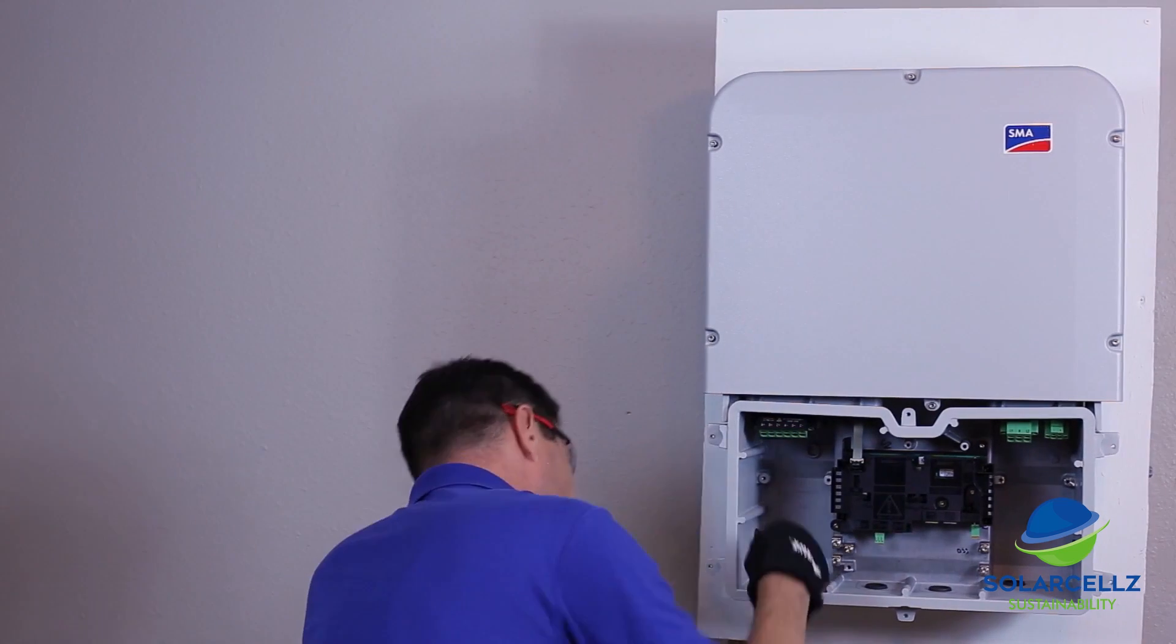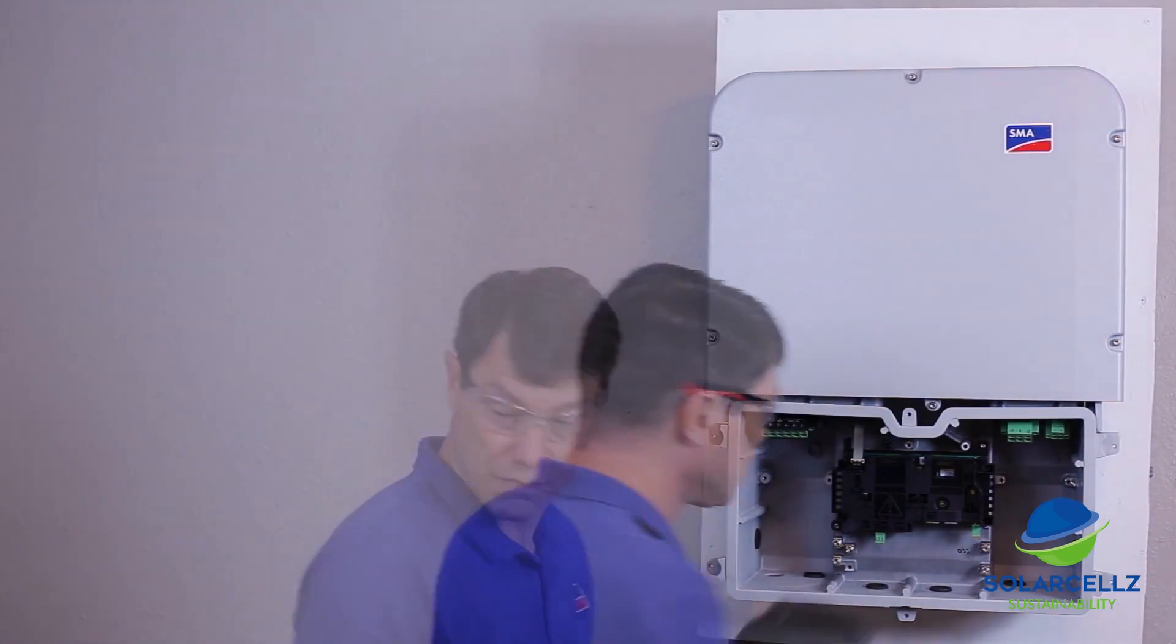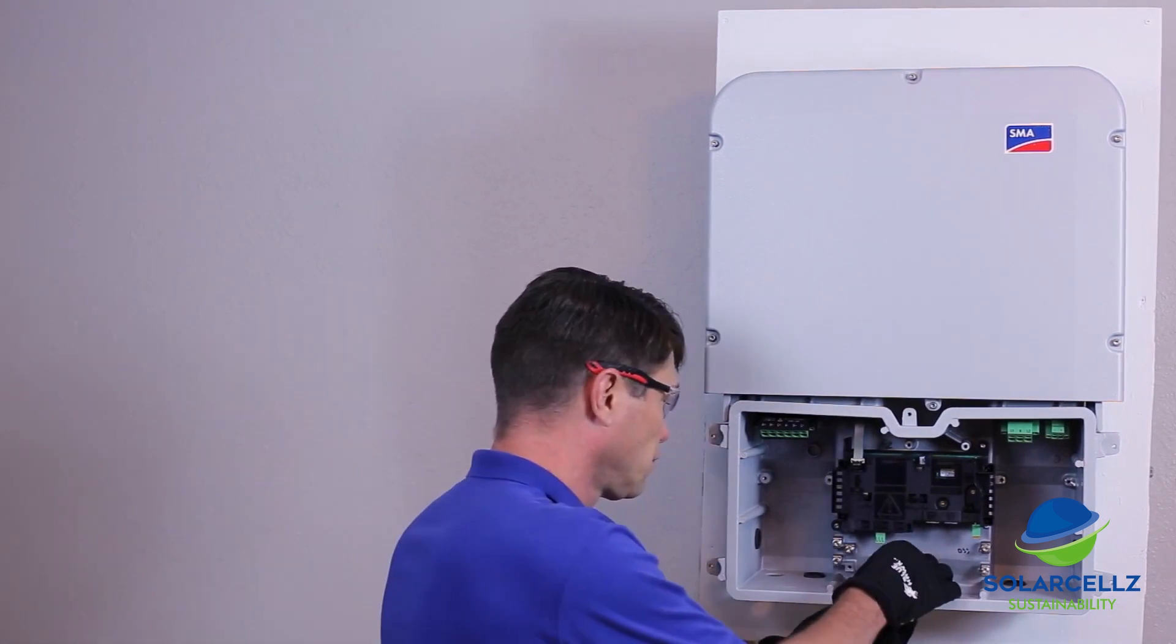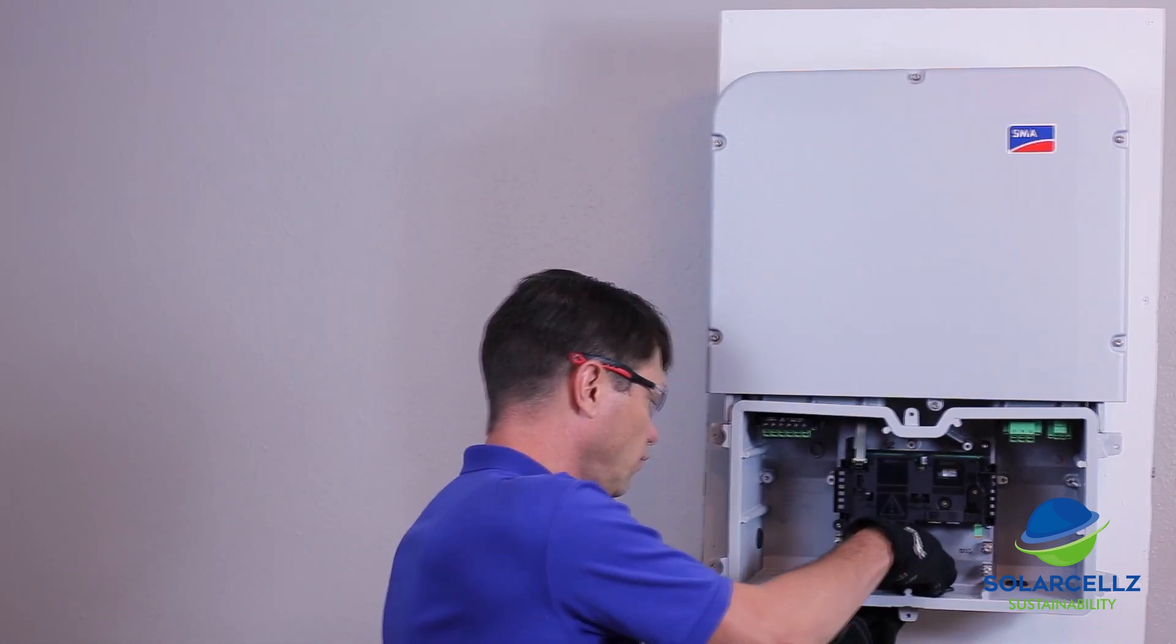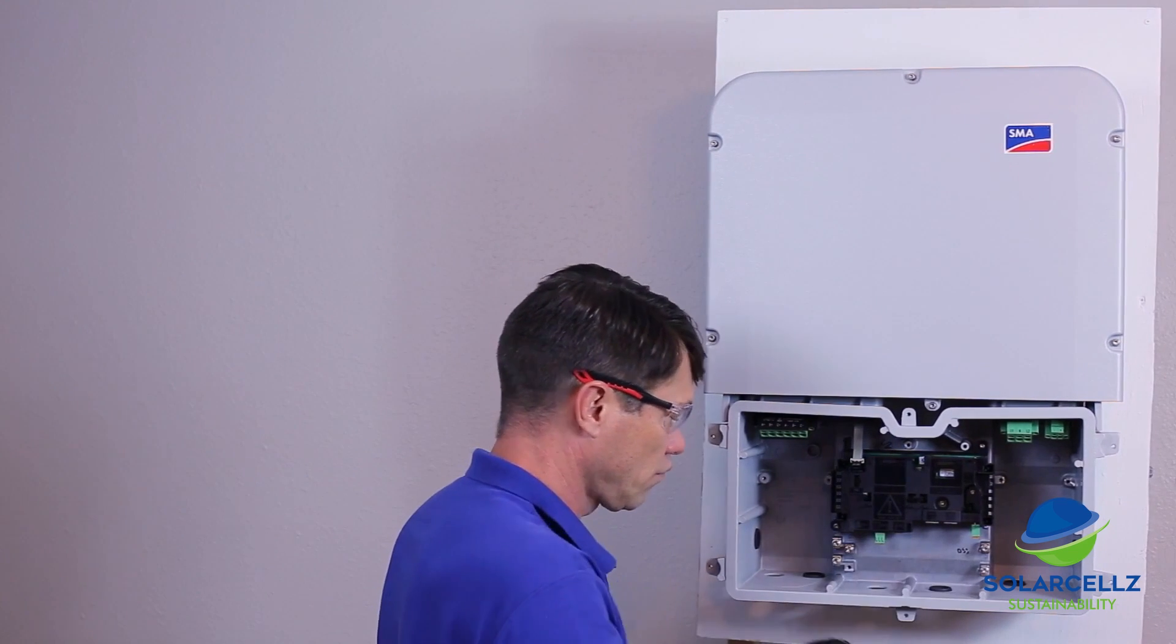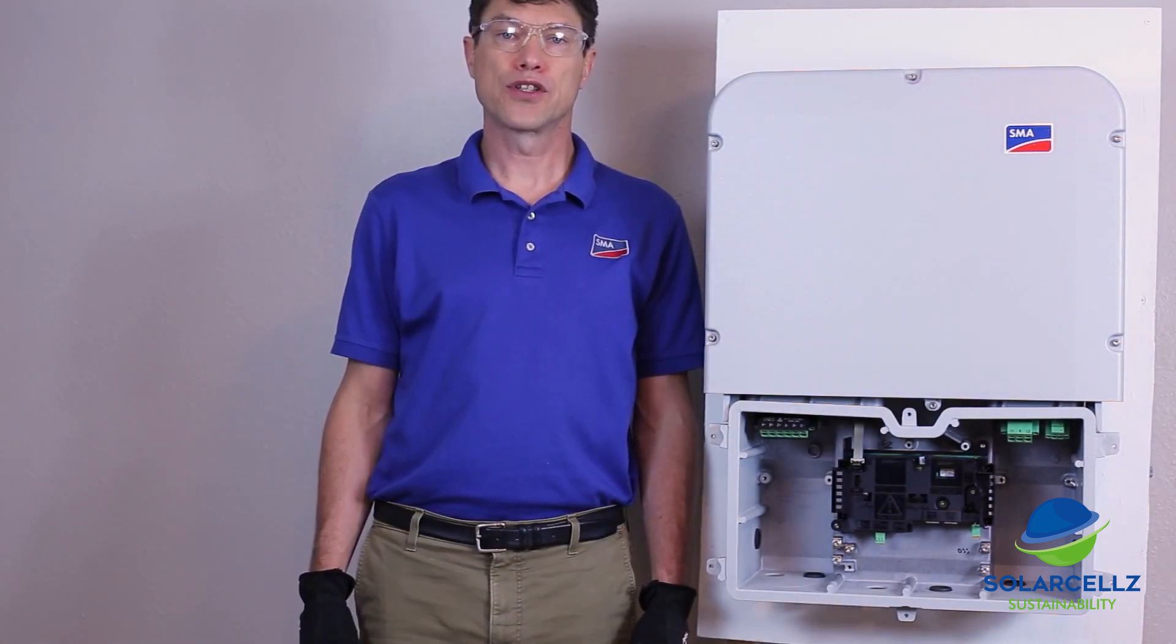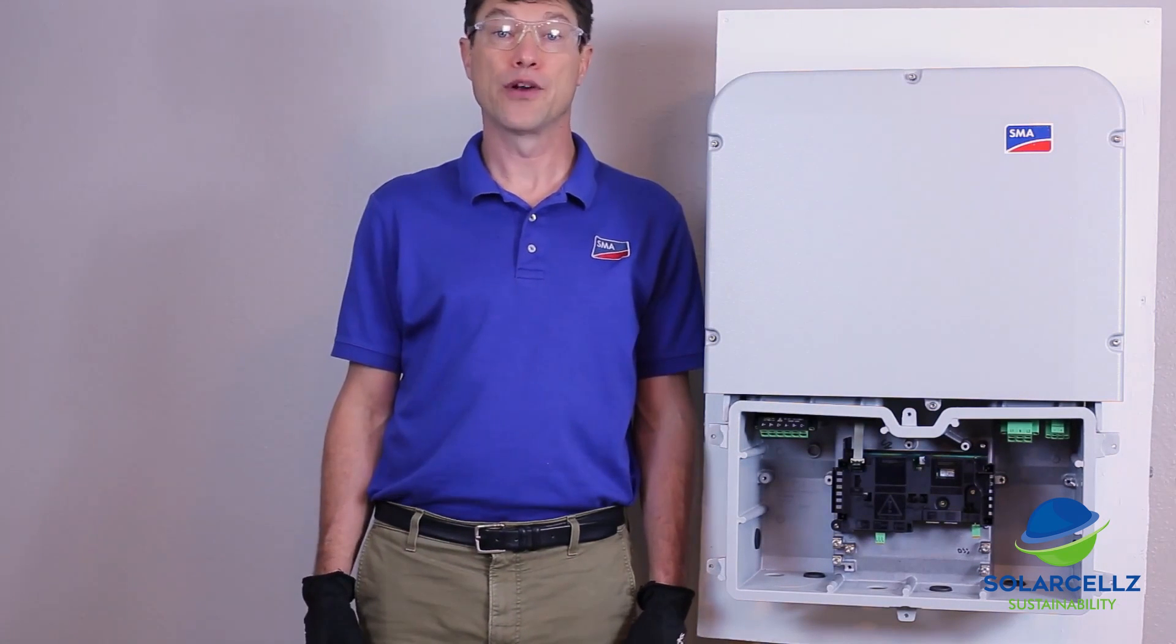Note that one AC and one DC knockout are taped shut; the remaining six three-quarter inch knockouts are plugged. Remove the tape or plugs from the knockout openings that will be used for conduit attachment, and ensure that all unused knockouts have plugs securely inserted.